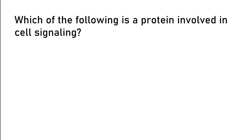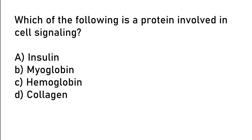Which of the following is a protein involved in cell signaling? Insulin, myoglobin, hemoglobin, collagen. So the correct answer is option A. Insulin.